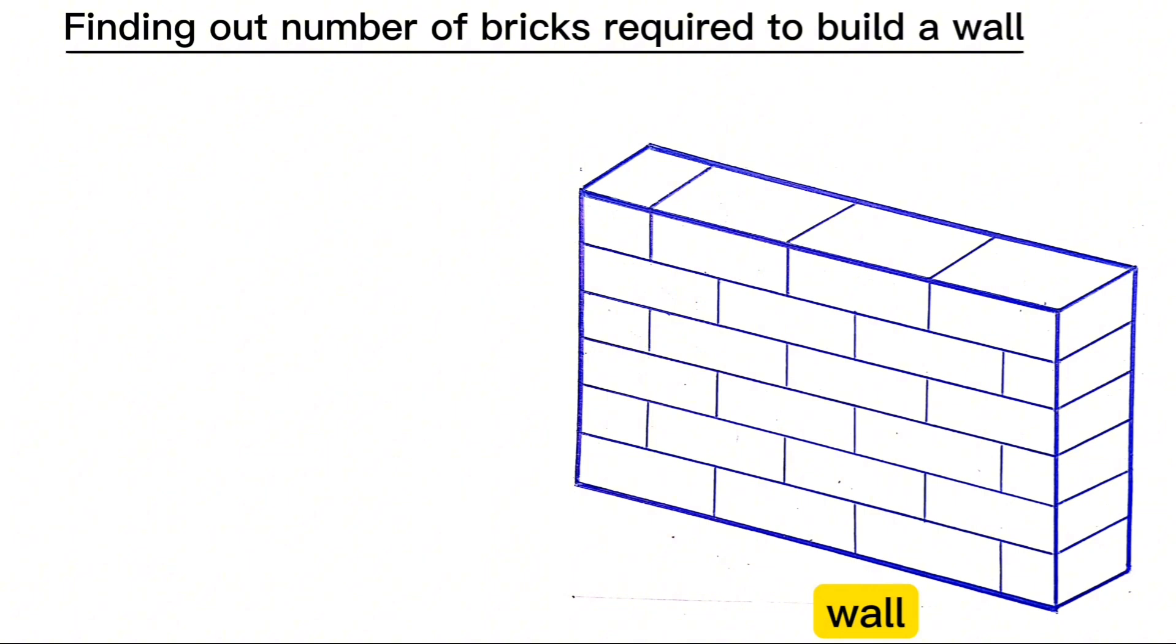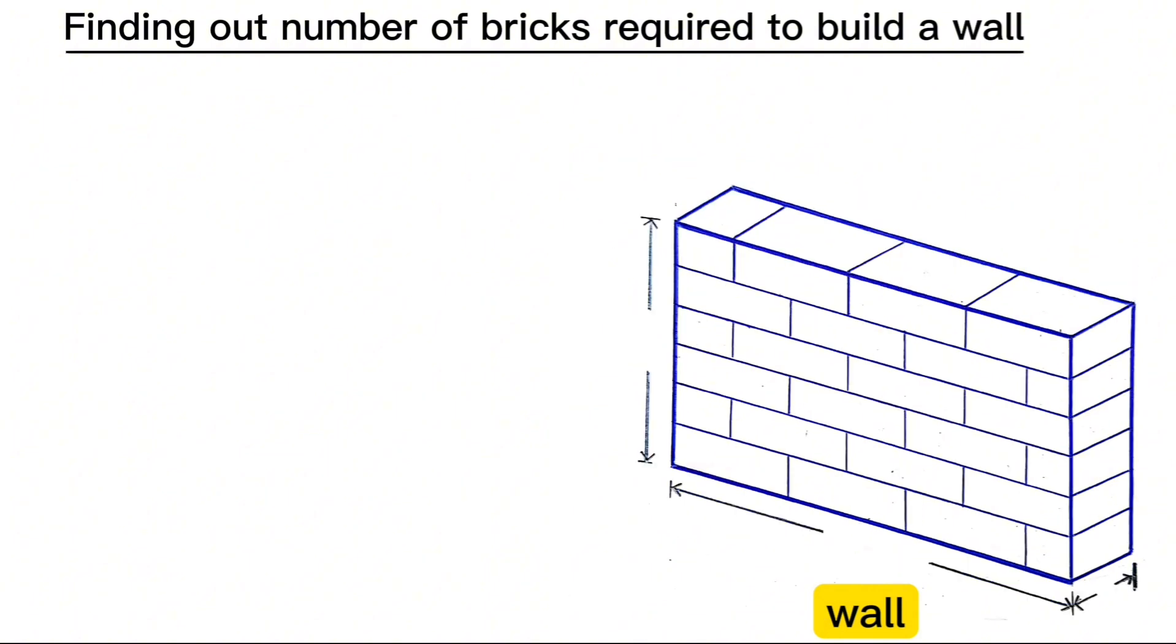This wall has three main dimensions. One: the length, which is a representation of the horizontal distance. Two: the height, which is the vertical distance of the wall.